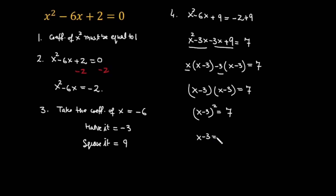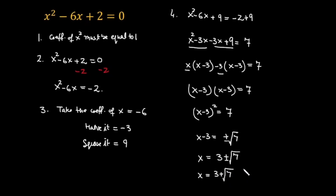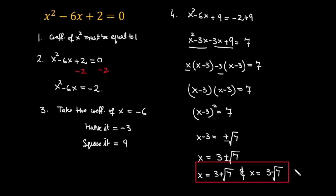Now take the square root on both sides: x minus 3 equals plus or minus the square root of 7. So x equals 3 plus or minus the square root of 7. We get two values: x equals 3 plus root 7, and x equals 3 minus root 7. This is my final answer. I hope you liked this video, thanks for watching.